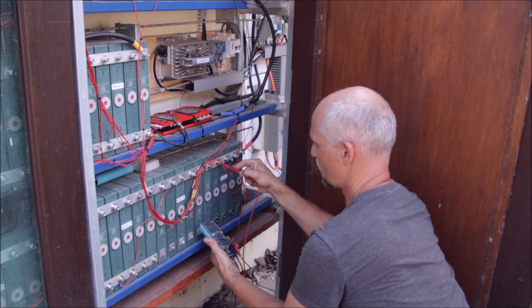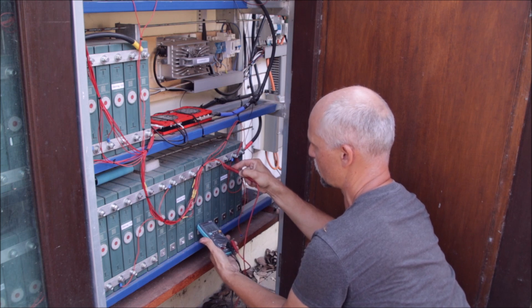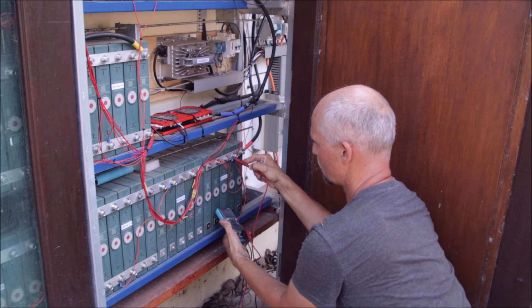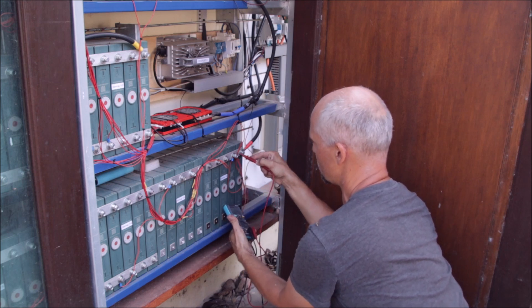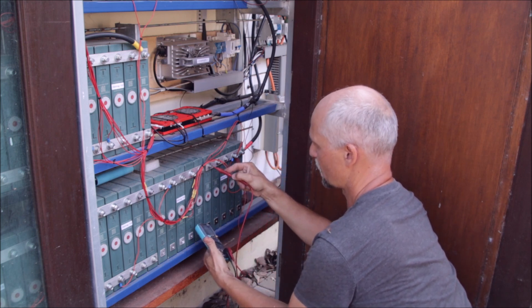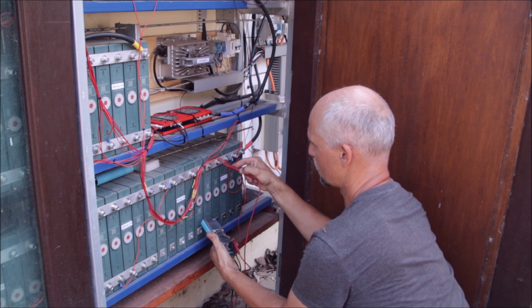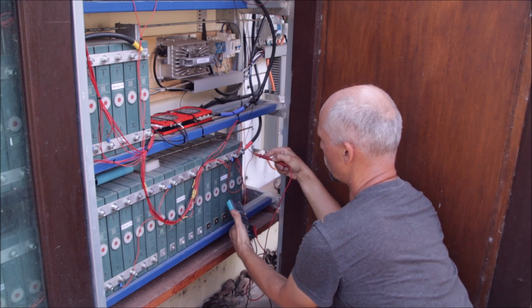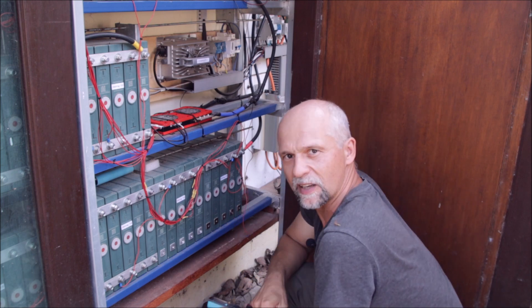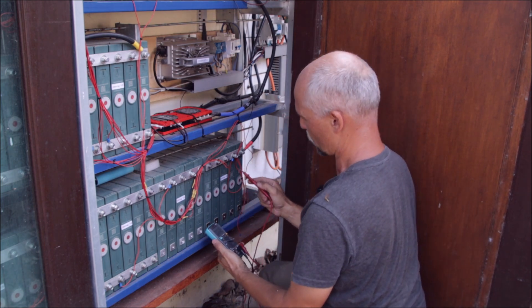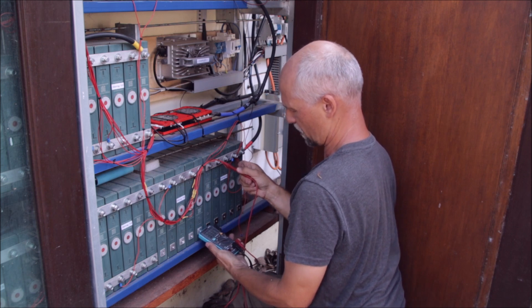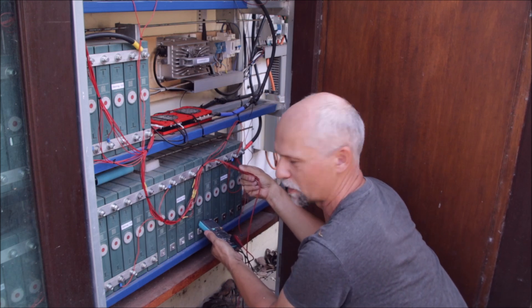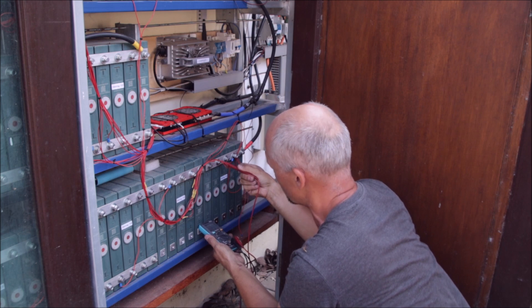And wow, here I have one reading 3.337 where all the other ones are 3.371 or 3.372. Four cells are on the exact same voltage level, but cell number two is lower by four hundredths of a volt. So this one is our culprit. It's actually a cell from batch number two which I bought one and a half years ago.